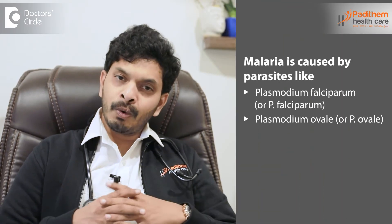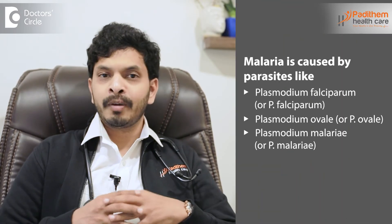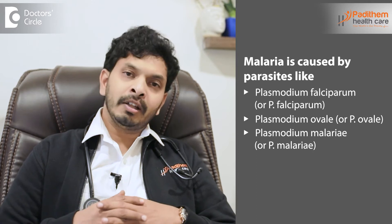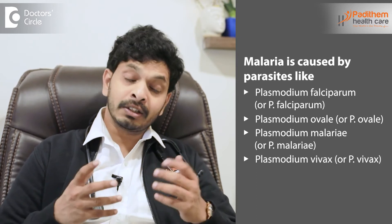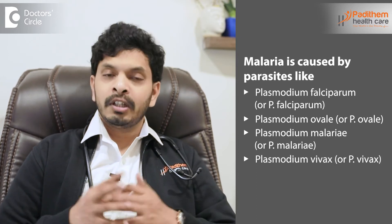Malaria can be caused by many parasites from the Plasmodium family, like Plasmodium falciparum, Plasmodium ovale, Plasmodium malariae, and Plasmodium vivax. All of these cause malarial disease. As already mentioned, it can be easily transmitted by the female Anopheles mosquito.